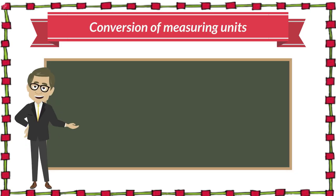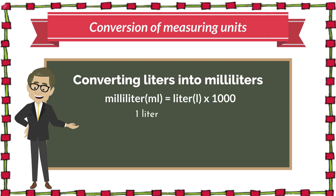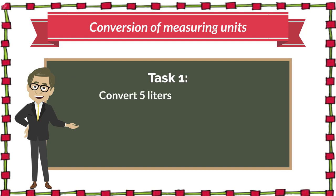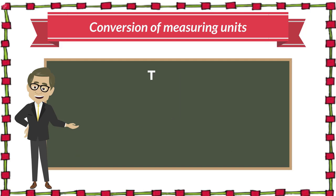Conversion of measuring units. Converting litres into millilitres: if we want to convert litres into millilitres, we multiply the litres by 1000, since 1 litre equals 1000 millilitres. For instance, let's convert 5 litres into millilitres. 5 multiplied by 1000 equals 5000. Therefore, 5 litres are equal to 5000 millilitres.